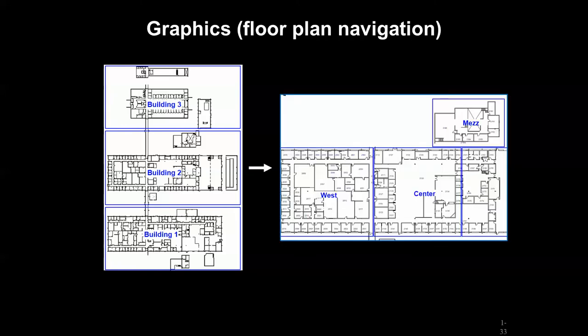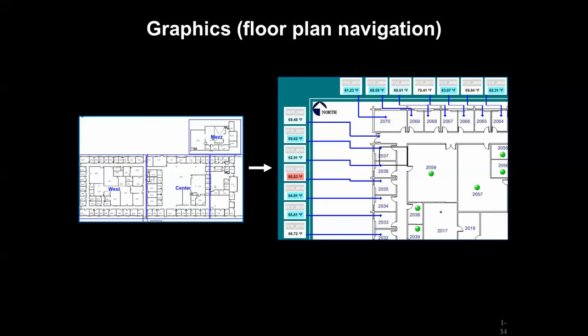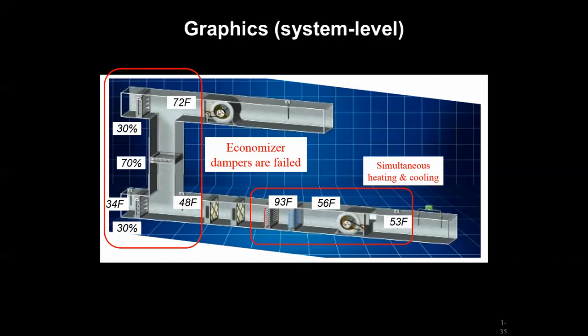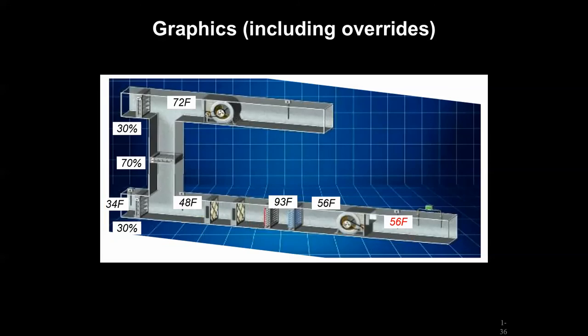There are also graphical screenshots in these front ends. We might have a floor plan level interface with multiple buildings that can be clicked and zoomed in, giving a summary rollup so we can see at the zone level if our control system is keeping folks happy at a space temperature setpoint. We can also have system level graphics — an air side system represented schematically — where with a snapshot we can see key information like whether we have simultaneous heating and cooling or whether economizer dampers are doing what we expect. This is also a platform to override setpoints and output commands temporarily for maintenance purposes.